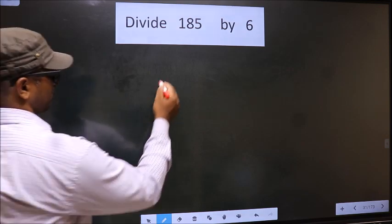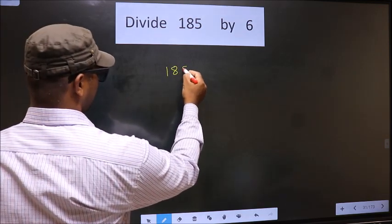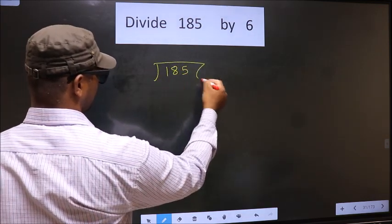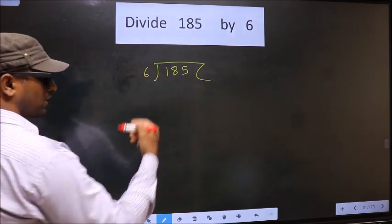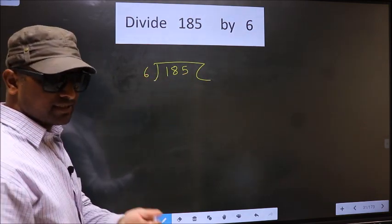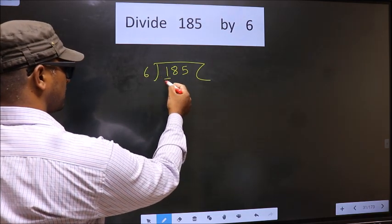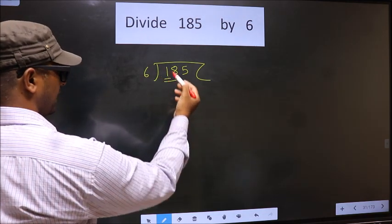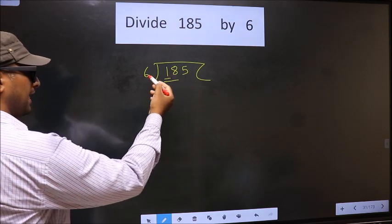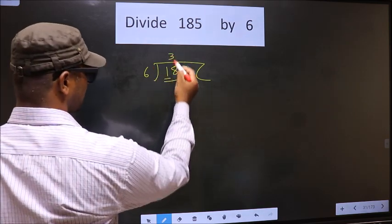See, that is 185, 6. Okay, next. Now here we have 1, 1 smaller than 6. So we take two numbers that is 18. When do we get 18 in 6 table? 6, 3 is 18.